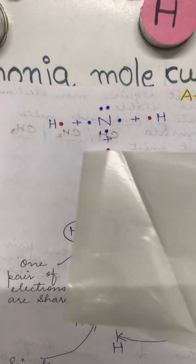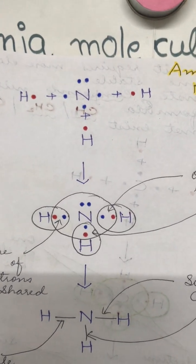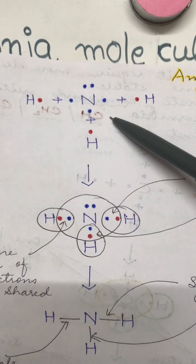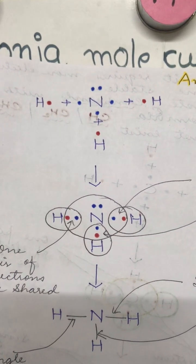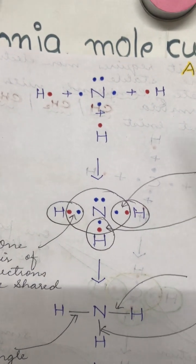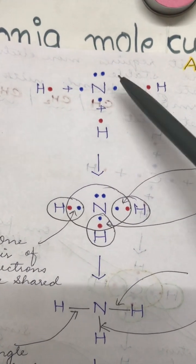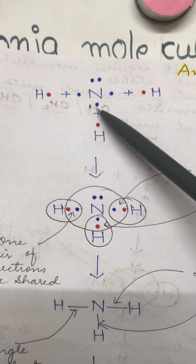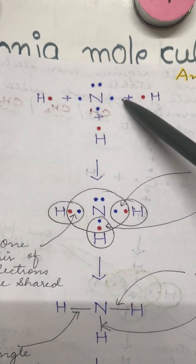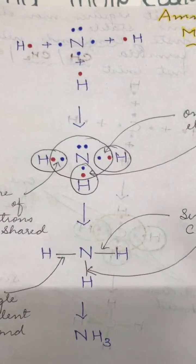When nitrogen forms a bond with three hydrogen atoms, each hydrogen atom provides one electron to nitrogen. Therefore nitrogen needs to bond with three hydrogen atoms to achieve three more electrons and follow the octet rule. Nitrogen shares one electron with the first hydrogen, one with the second, and one with the third, forming three covalent bonds.